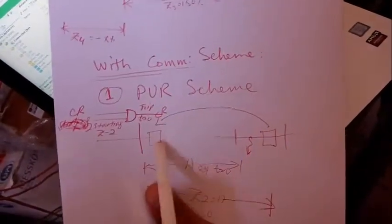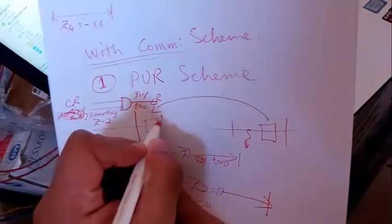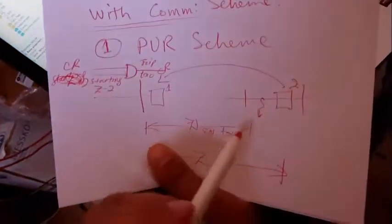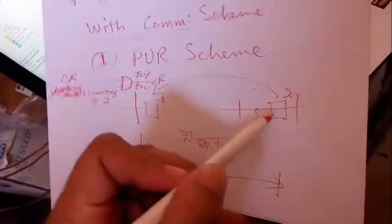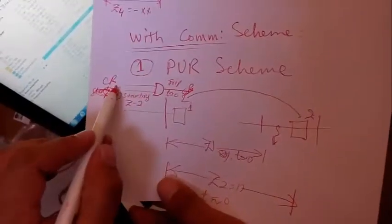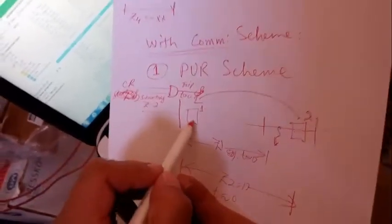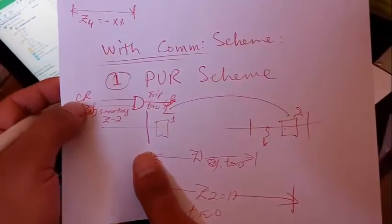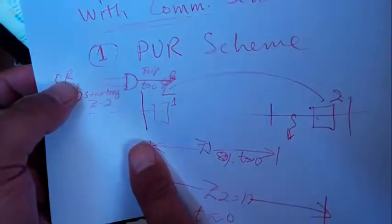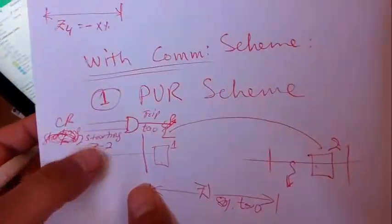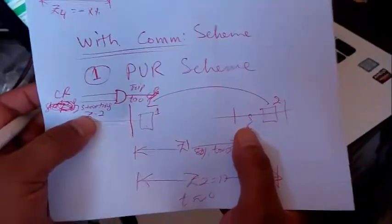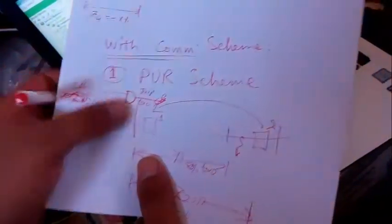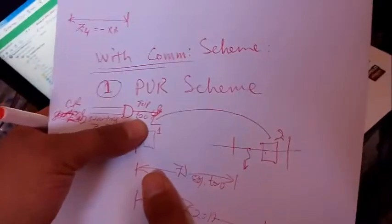In this case, communication occurs between two relays at different substations — substation one and substation two. If a fault is sensed in zone two, this relay sends a carrier signal called 'carrier receive' to substation one. At substation one, an AND gate has two conditions: carrier receive from the communication panel, and the fault lying in the start of zone two. When both are high, it trips at time t=0 seconds.